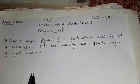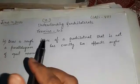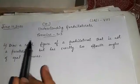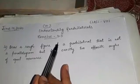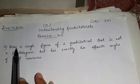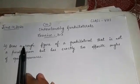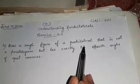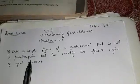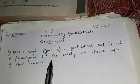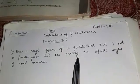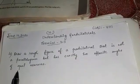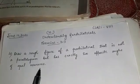Good morning students. Today we shall start question number 4 of exercise 3.3. The question is: draw a rough figure of a quadrilateral that is not a parallelogram but has exactly two opposite angles of equal measures.